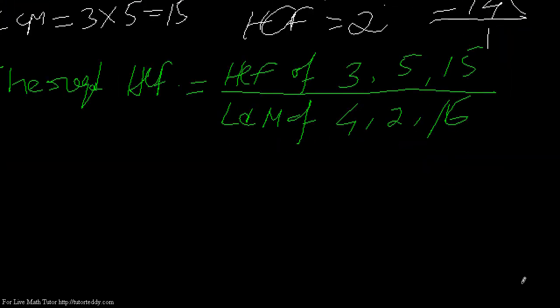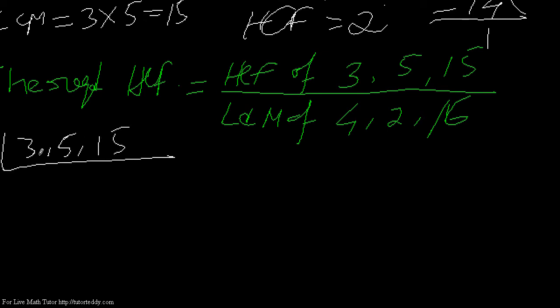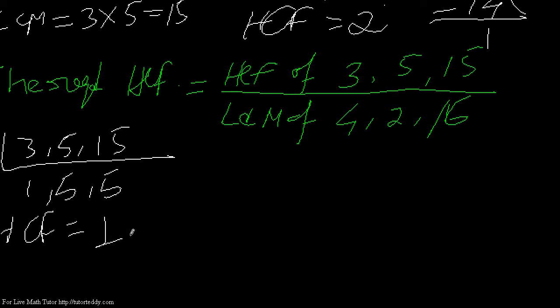Let me find the HCF of 3, 5, and 15. I divide by 3: 3 ones are 3, 5 remains, and 3 fives are 15. Not all three of them are divisible by 3, so the HCF equals 1, because only by 1 are all three numbers divisible.